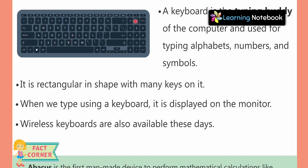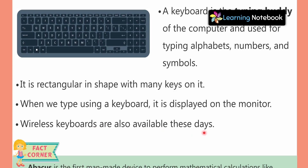The keyboard is rectangular in shape. When we type using a keyboard, it is displayed on the monitor. It is very important to understand that when we type anything from the keyboard, it displays on the monitor — because the monitor is the display part of the computer, so everything appears on the display. Wireless keyboards are also available these days.